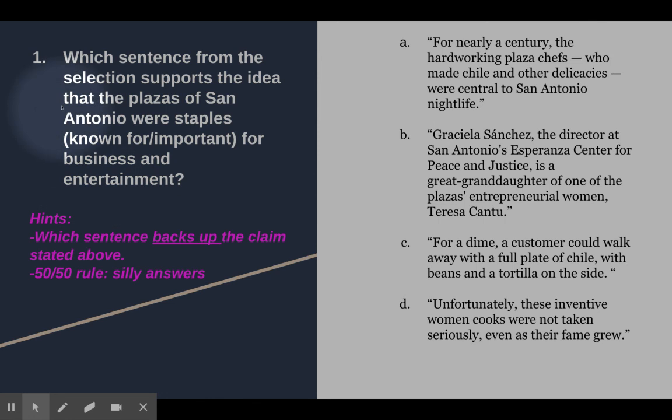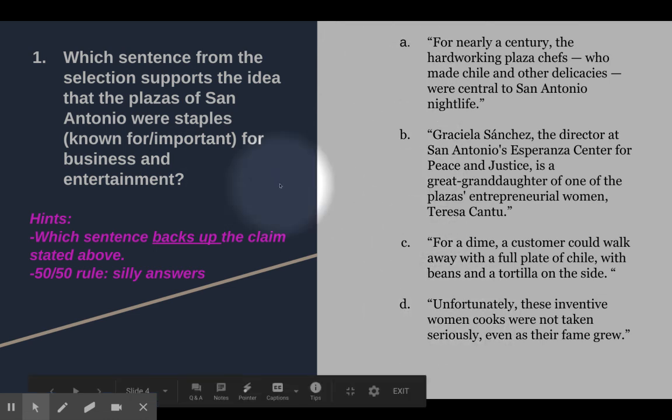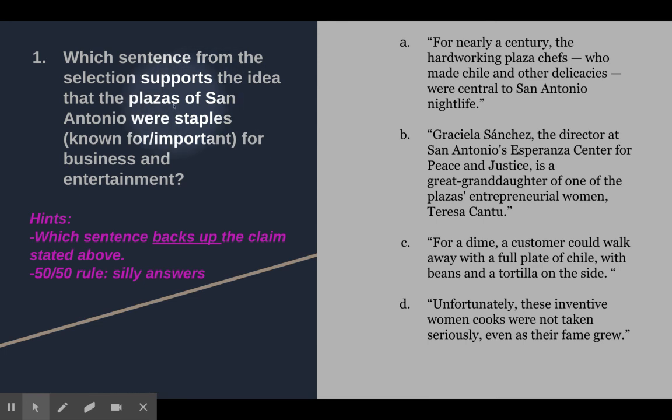Which sentence from the selection supports the idea that the plazas of San Antonio were staples for business and entertainment? So, what the question is asking is it wants you to use text evidence, which is this right here. These are direct quotes from the text to support this statement. The statement says, plazas of San Antonio were staples for business and entertainment. That's the main idea that you are being given.